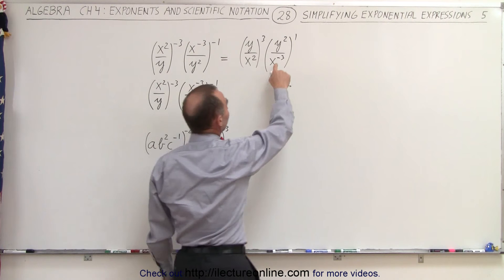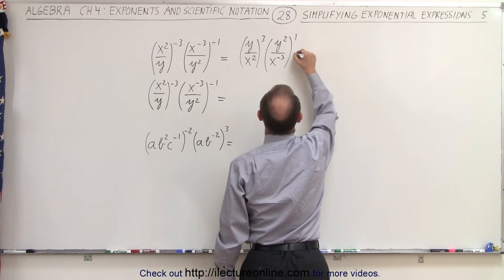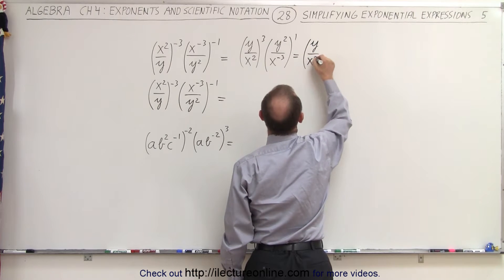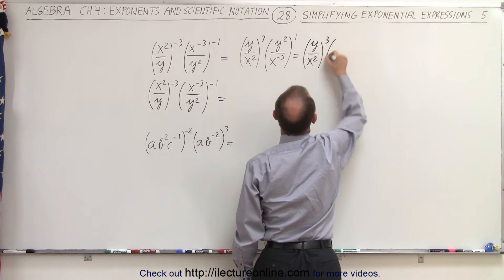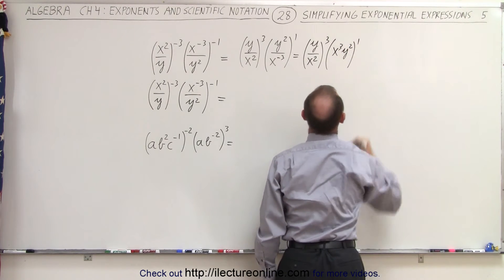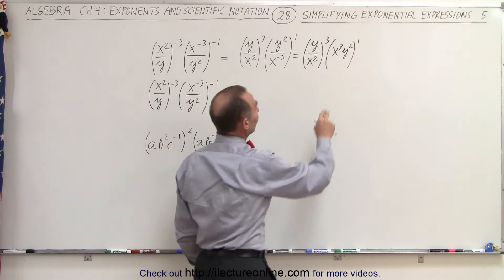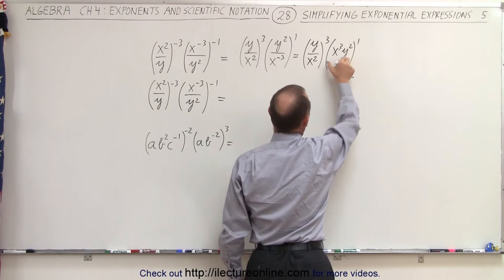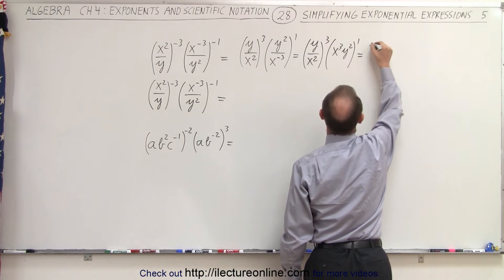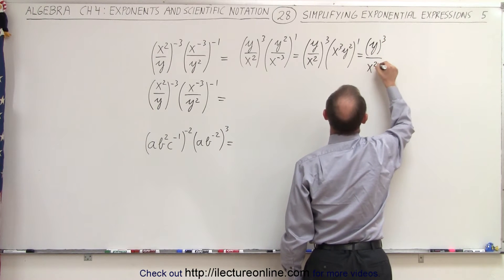Notice I have a negative exponent here. I can move that to the numerator and make that into a positive exponent. So this is equal to the quantity y over x squared to the third power, times x cubed y squared to the first power. Now all the negative exponents are gone. Notice anything raised to the first power, you simply get that quantity back. Here we're going to apply the exponent rule, so this becomes y to the third power divided by x squared to the third power, times x cubed y squared.